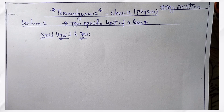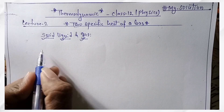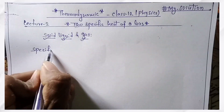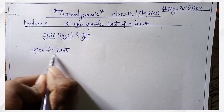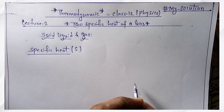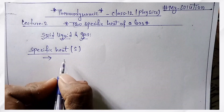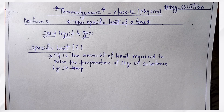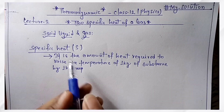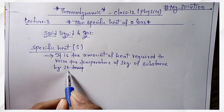This is the definition of heat capacity. Definition: Specific heat — S-P-E-C-I-F-I-C heat. What is the definition of specific heat? The amount of heat required to raise the temperature of 1 kg of substance by 1 Kelvin.